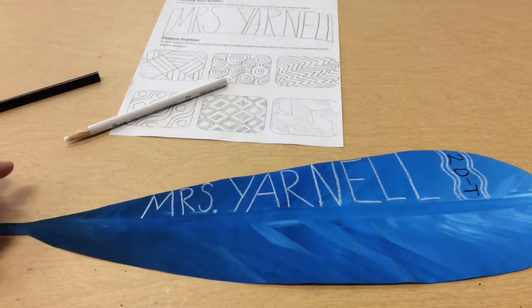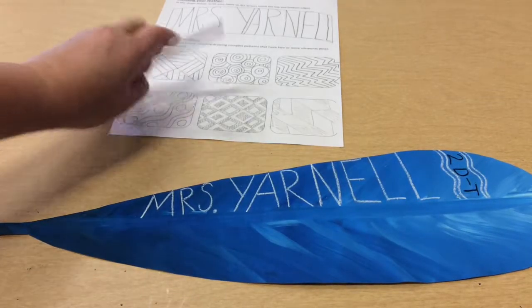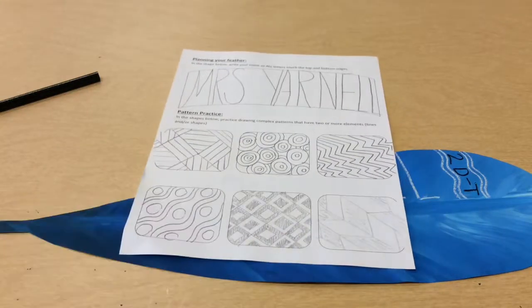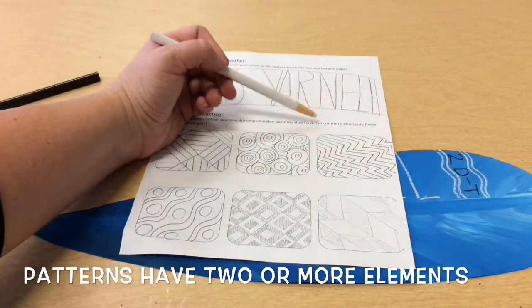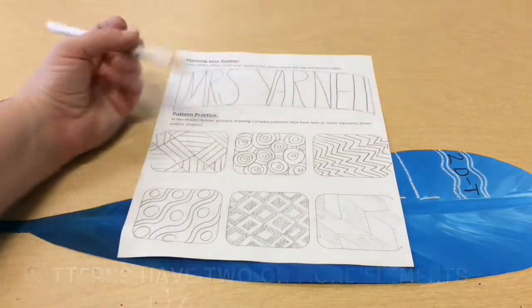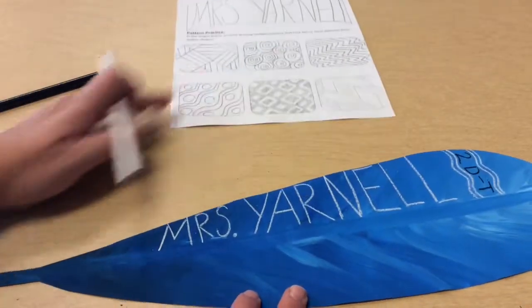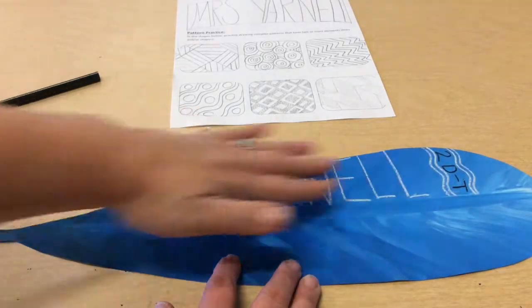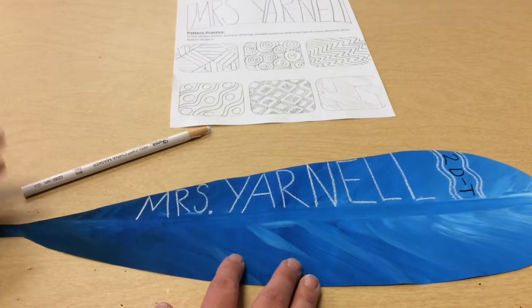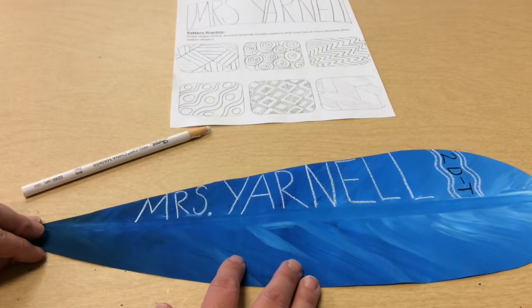the rest is kind of up to me on how I want to do my patterns. Now these are some of the patterns that I came up with. Remember you want to do a pattern that has two or more elements. I can use those or if I want to, I can come up with my own. I seem to have a lot of white already, so I'm going to do some patterns with my black.